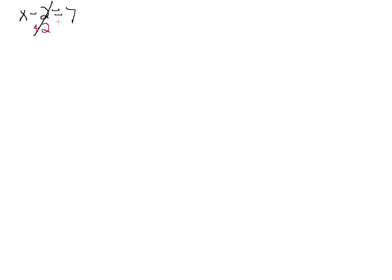The important thing about an equation is we want to keep the balance — whatever we do on one side we want to do on the other side. So if we add 2 on this side we need to add 2 on this side. That's the most important thing when we talk about equations: we want to keep it balanced. So we get x on the left, and 7 plus 2 is 9. So x equals 9.